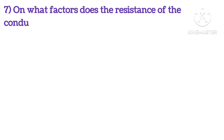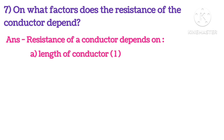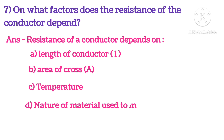On what factors does the resistance of a conductor depend? Resistance of a conductor depends on the length of the conductor, the area of cross-section, temperature, and the nature of material used to make the conductor.